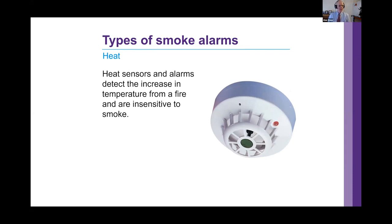Heat sensors and alarms, again as specified in the fire risk assessment. A thorough, suitable and sufficient fire risk assessment will look at the detector in place and make appropriate recommendations. Heat detection is very important, especially in a kitchen area, to avoid false alarms, and to be used in conjunction with ionizing detectors. The heat detector can be identified visually by what looks like a metal black spike coming down in the middle of a protective cage.